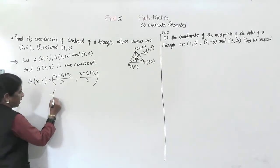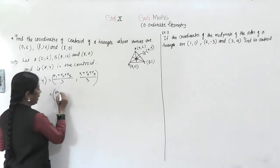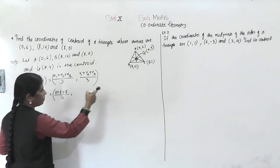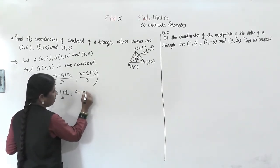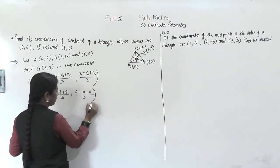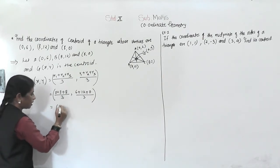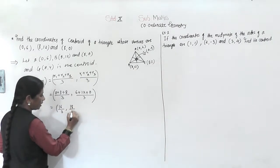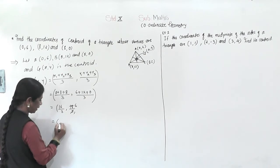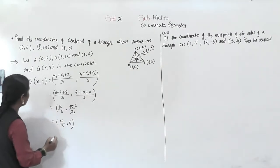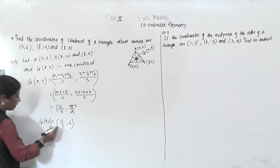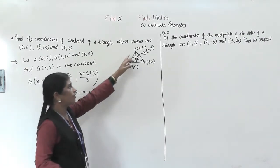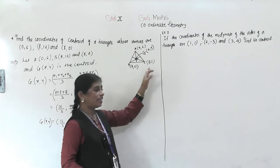So here: 0 + 8 + 8 upon 3, comma 6 + 12 + 0 by 3. That gives 16 by 3, comma 18 by 3. And 18 by 3 equals 6. So the coordinates of the centroid of the triangle are (16/3, 6). So G(x, y) equals (16/3, 6). These are the coordinates of the centroid of triangle ABC with vertices (0,6), (8,12), and (8,0).